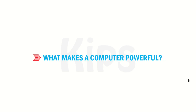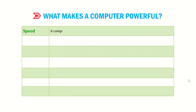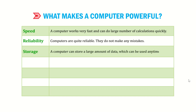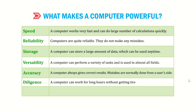Let me tell you what makes a computer powerful. Speed — a computer works very fast and can do a large number of calculations quickly. Reliability — computers are quite reliable and do not make any mistakes. Storage — a computer can store a large amount of data which can be used anytime. Versatility — a computer can perform a variety of tasks and is used in almost all fields. Accuracy — a computer always gives correct results; mistakes are normally done from the user's side. Diligence — a computer can work for long hours without getting tired. Multitasking — a computer can do many things at the same time.